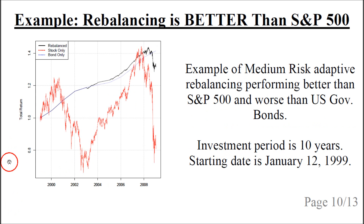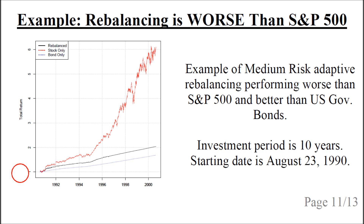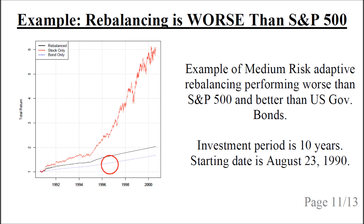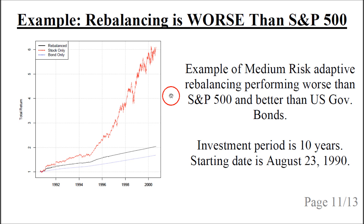But this is not always the case. In an example starting in 1990 and going for 10 years, the rebalanced portfolio was invested in the S&P 500 for some of the first years but, after around 1996–1997, it was entirely invested in US government bonds. After 10 years, it only did somewhat better than US government bonds. This was a period of a tremendous bull market for the S&P 500, so the S&P 500 performed a lot better than the rebalanced portfolio.